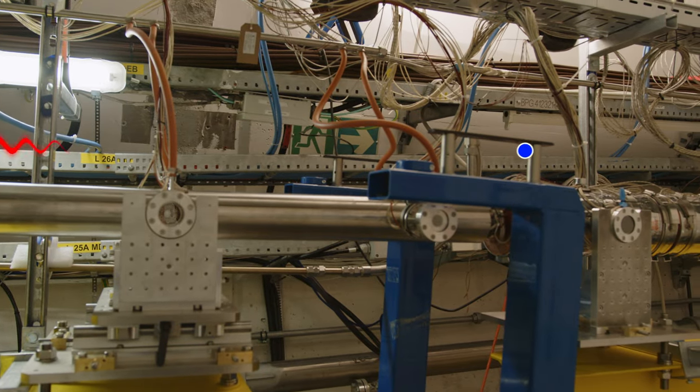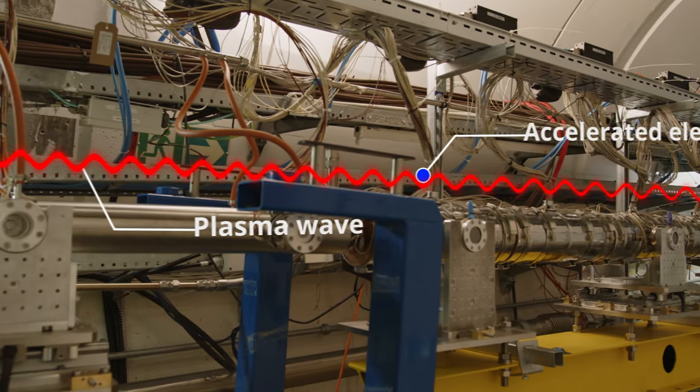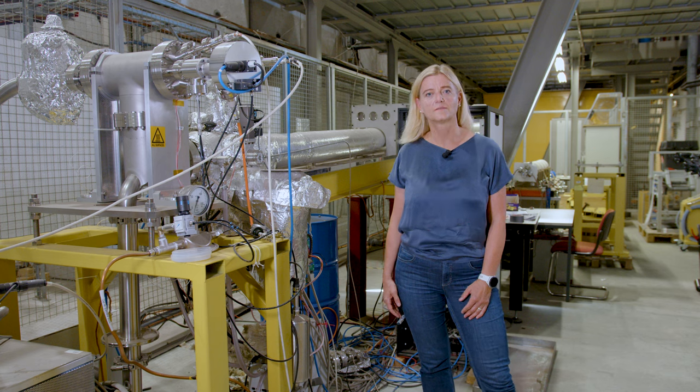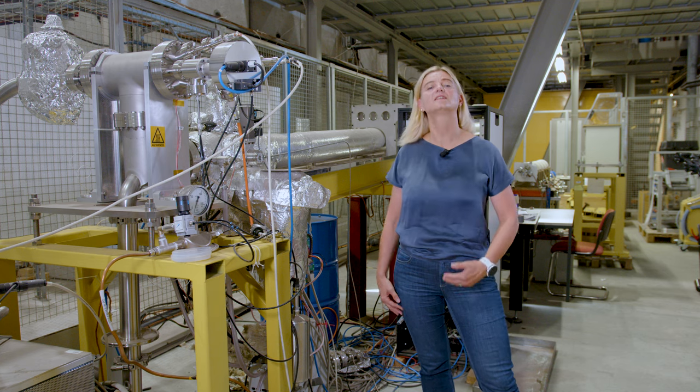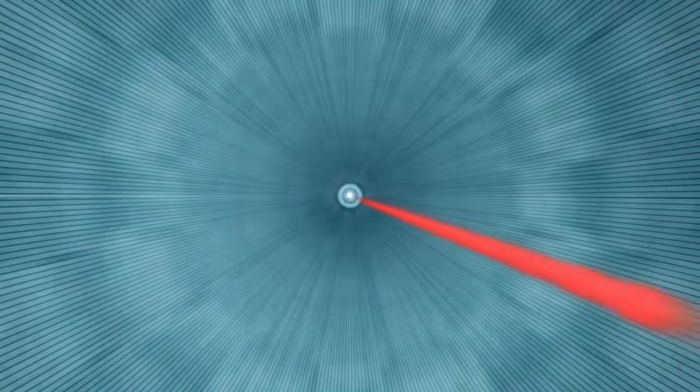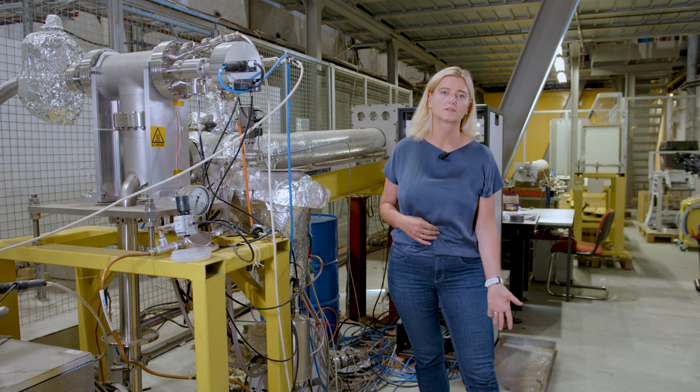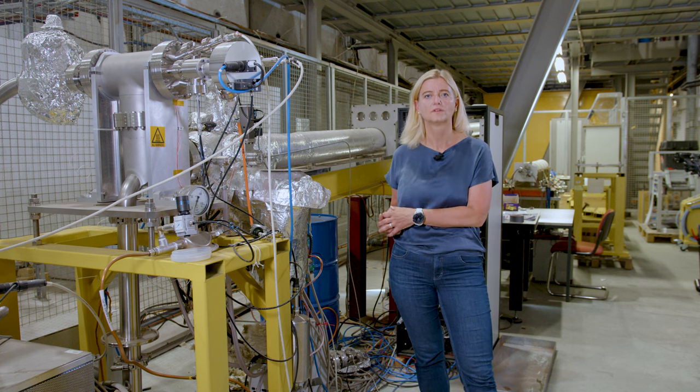Now we are starting this new phase and for this we built a new plasma source which is again 10 meters long and this plasma source now has a density step. We simply have two areas with two different densities and this allows us to accelerate particles much stronger along these 10 meters.